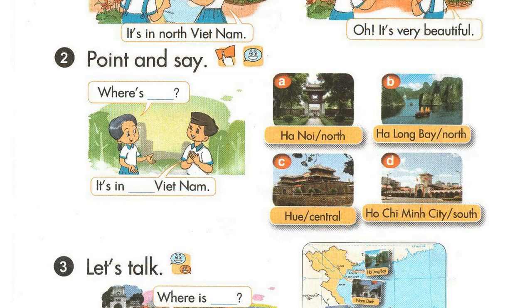Activity two. Point and say. Where's Ha Noi? It's in North Vietnam.